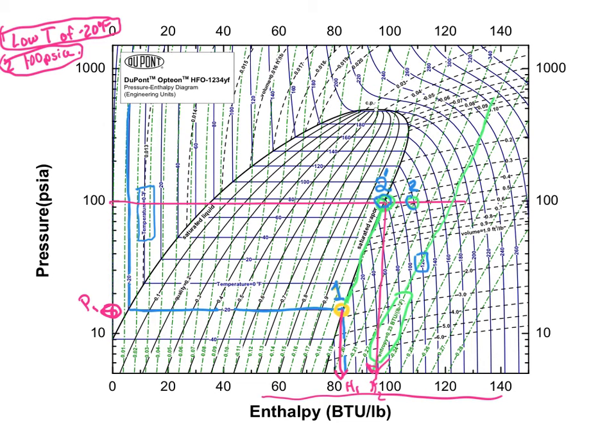Then point 3, you recall, comes from us condensing our vapor into saturated liquid. So we're going to just follow this constant pressure line that I conveniently already drew all the way across till it hits the phase envelope. And that will be point 3. So that's where point 3 is at.